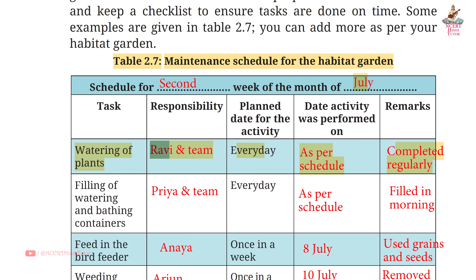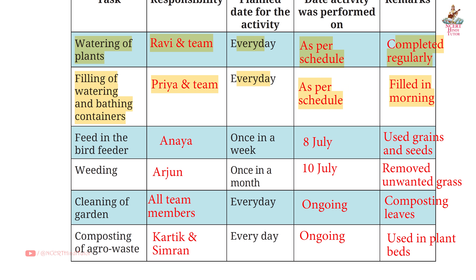Note: You can change the names of students as needed; these are just examples. Task 3: Feed in the bird feeder — Responsibility: Anaya — Planned: Once a week — Performed: 8 July — Remarks: Used grains and seeds. Task 4: Weeding — Responsibility: Arjun — Planned: Once a month — Performed: 10 July — Remarks: Removed unwanted grass.